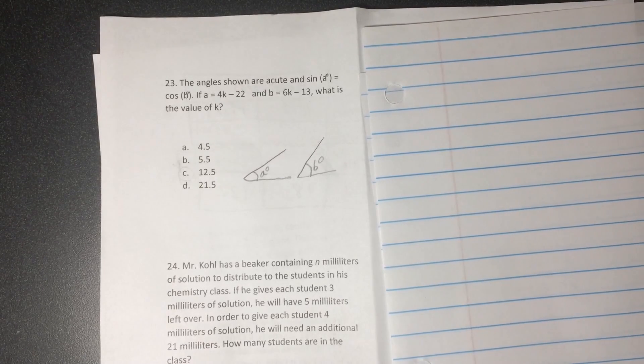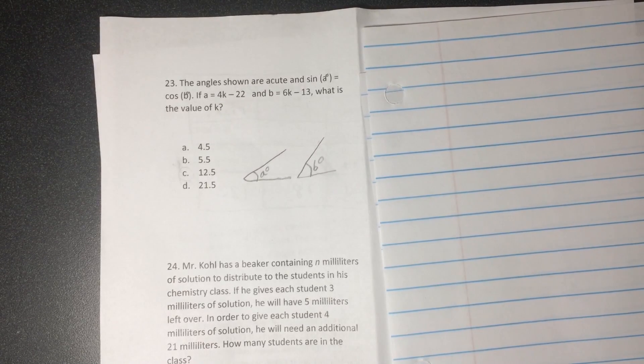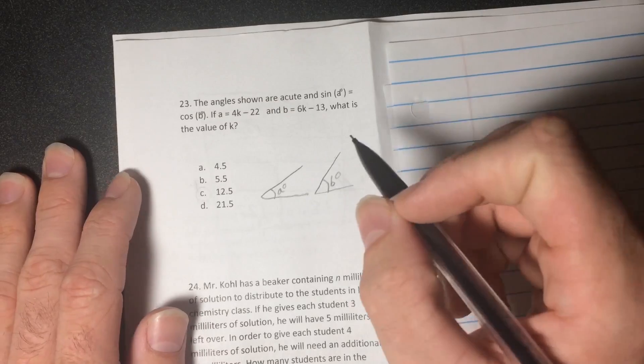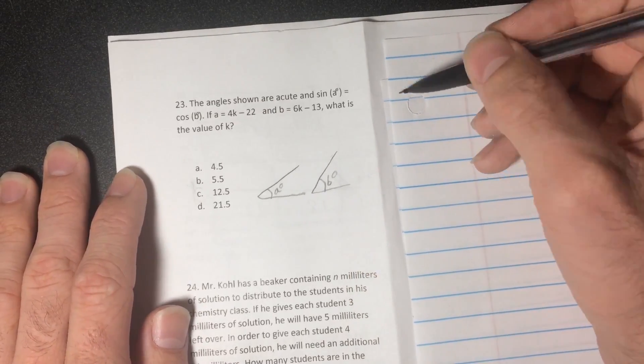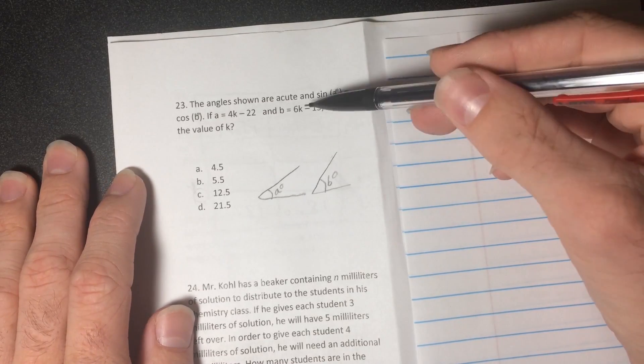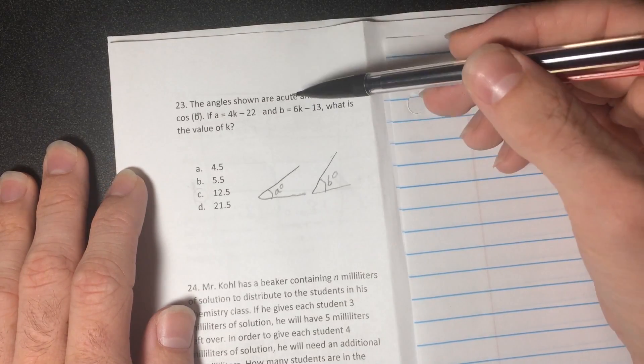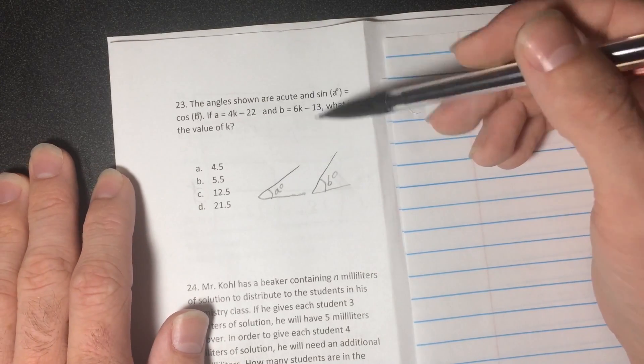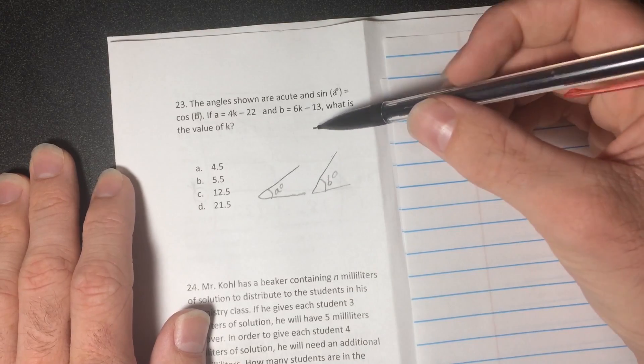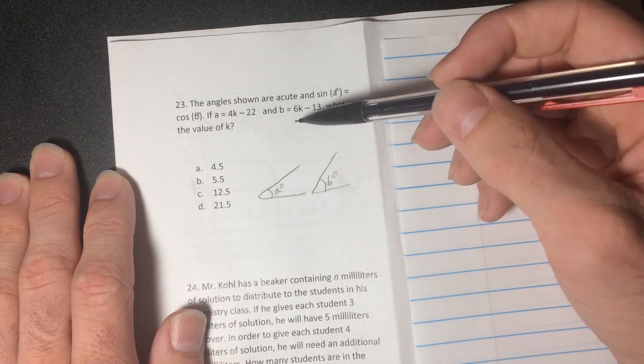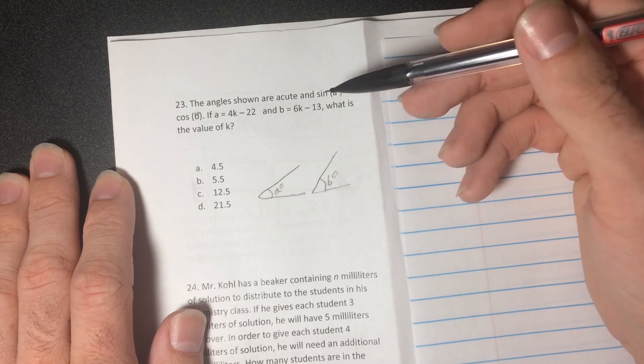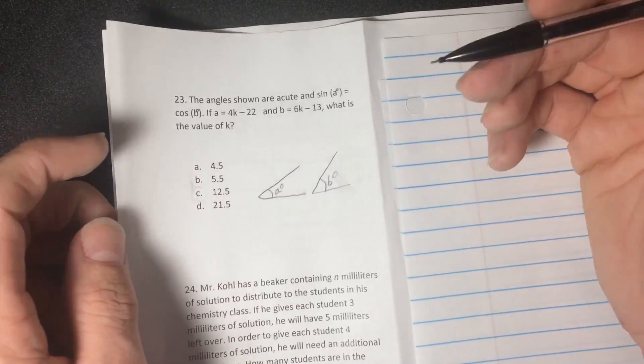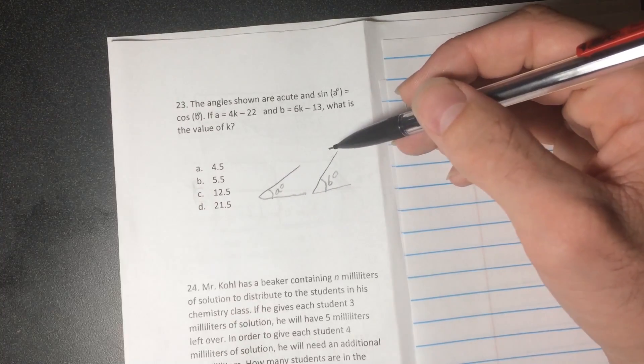Hello all, this is the SAT practice test solutions for problems 23 through 38 of the math test that comes with a calculator, thank goodness. So let's go into this first problem. The angles shown are acute and sine of A is equal to cosine of B. And if A is equal to 4k minus 22 and B is equal to 6k minus 13, what is the value of k?